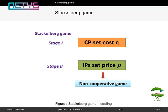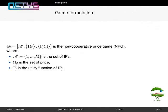The Stackelberg game is a game between two sets of players, leaders and followers. At the first stage of Stackelberg game, the content provider fixes the caching price C. At the second stage, given the caching price C, the infrastructure providers fix the price rho.